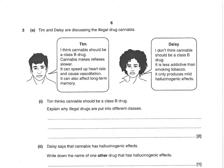Next question: Tim and Daisy are discussing the legal drug cannabis. Tim says cannabis should be a class B drug — it makes reflexes slower, can speed up heart rate and cause vasodilation, and can affect long-term memory. Daisy says it shouldn't be class B — it's less addictive than tobacco and only produces mild hallucinogenic effects. For two marks explaining why illegal drugs are put into different classes: the first mark is that some drugs are more harmful or dangerous than others, and the second mark is that that affects the penalty for using or possessing them.